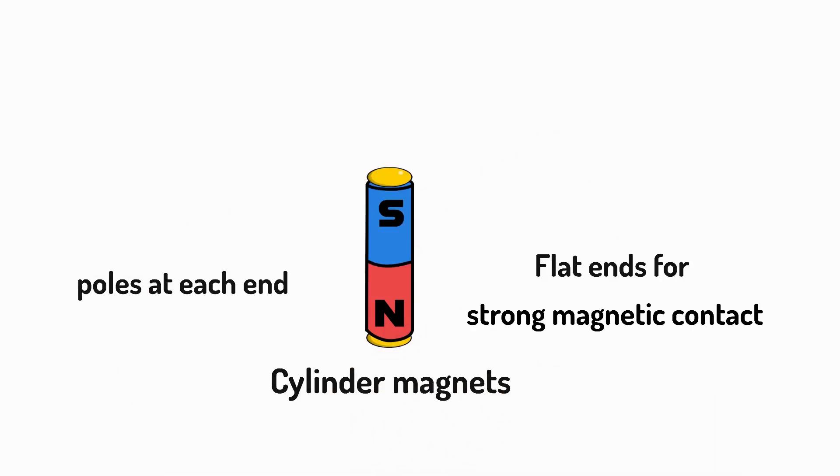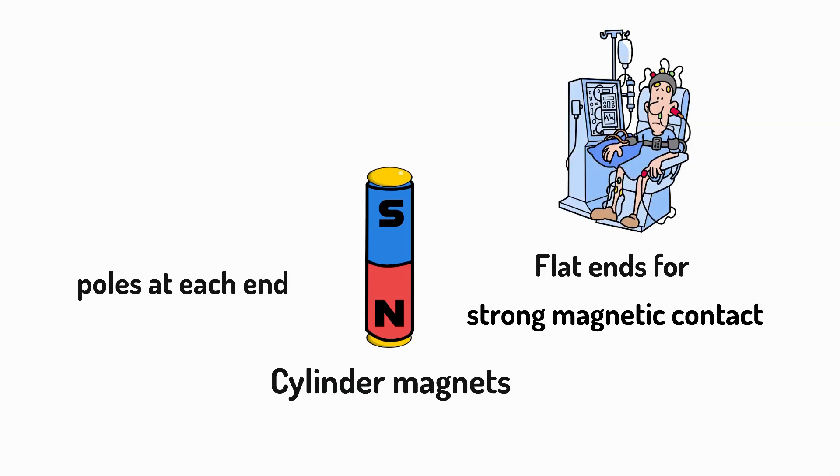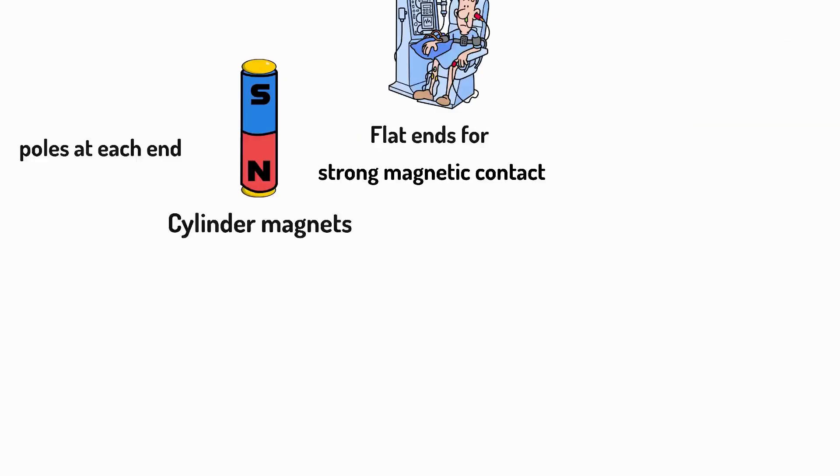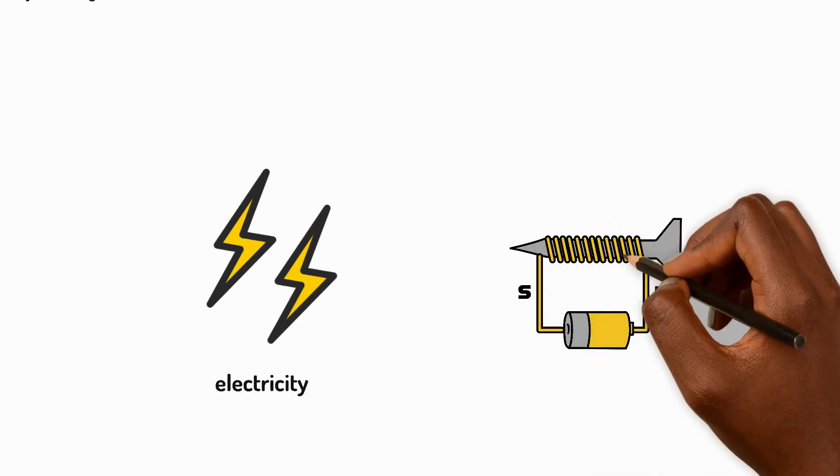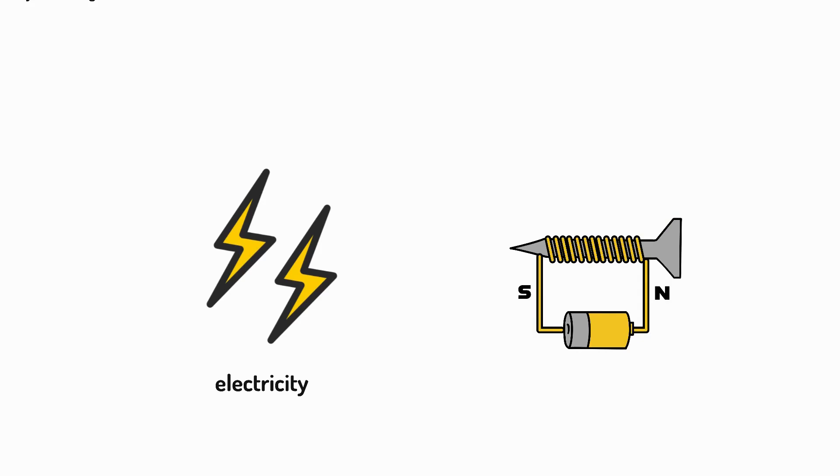The strongest magnets are actually made using electricity. This is when we wrap a wire around an iron nail and connect it to a battery. This creates an electromagnet that can be turned on and off.